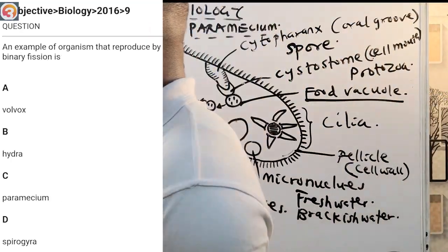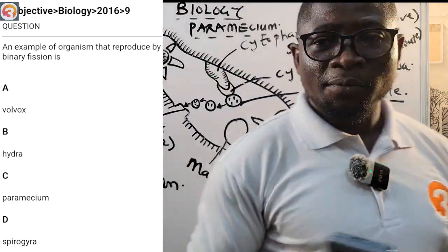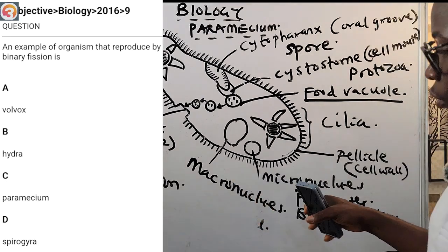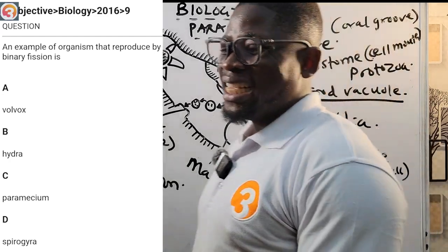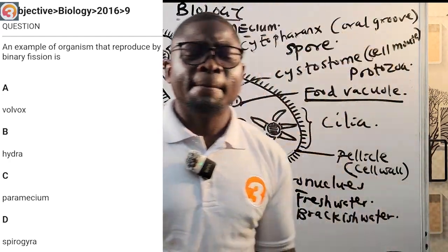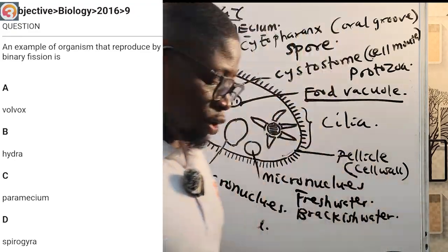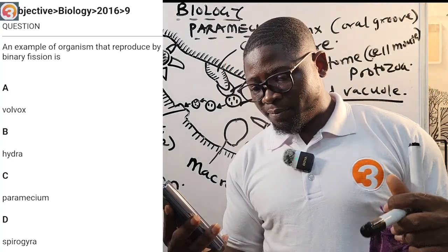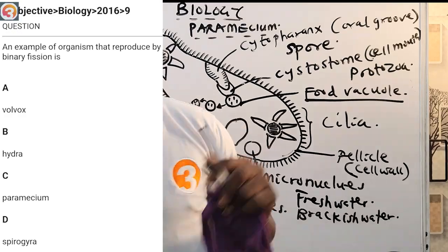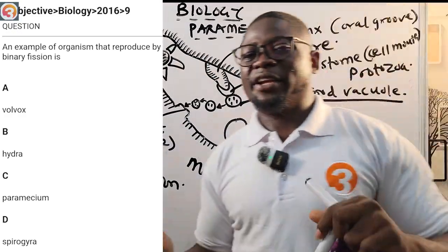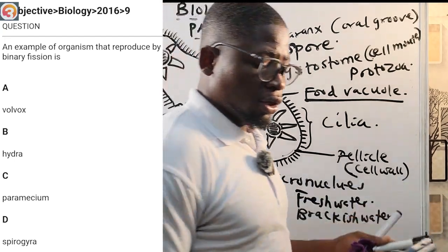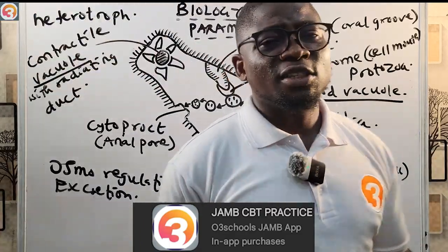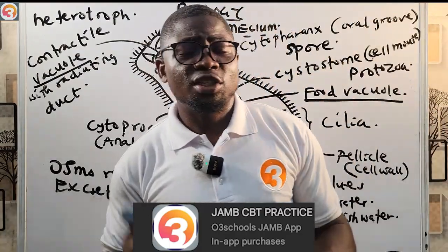For the 2016 question number 9: an example of organisms that reproduce by binary fission is — A) Volvox, B) Hydra, C) Paramecium, D) Spirogyra. The correct answer is C — Paramecium — which reproduces asexually by binary fission, the same as amoeba from the last episode. There are many more questions on the app, so please download it from the Play Store and start practicing today.